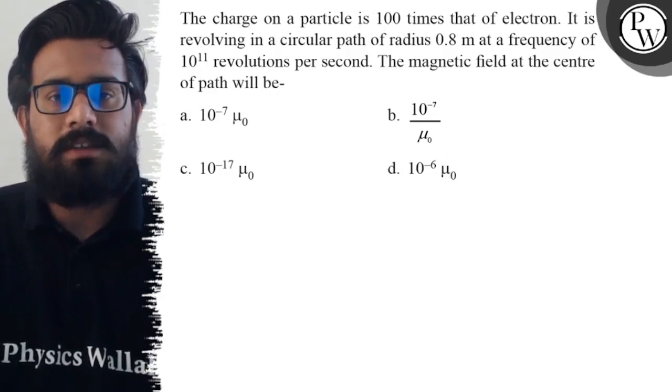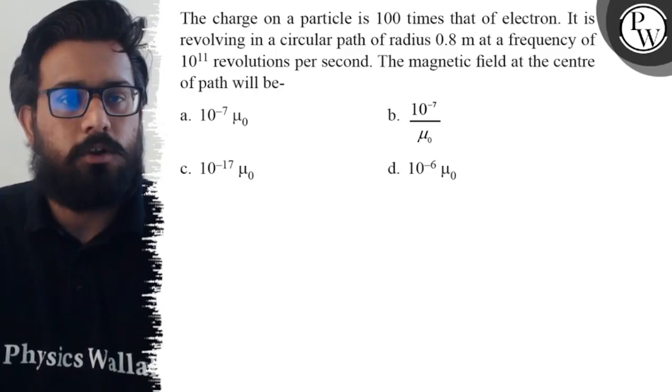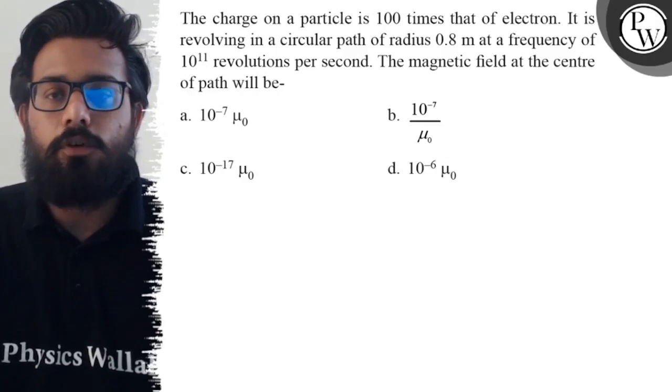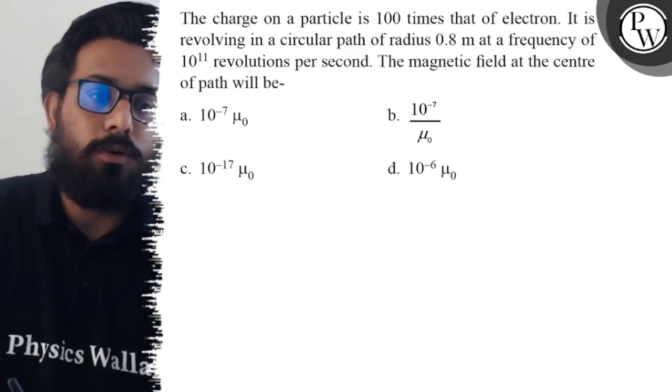Second option is 10^-7 upon μ₀. Third option is 10^-17 μ₀. And fourth option is 10^-6 μ₀.